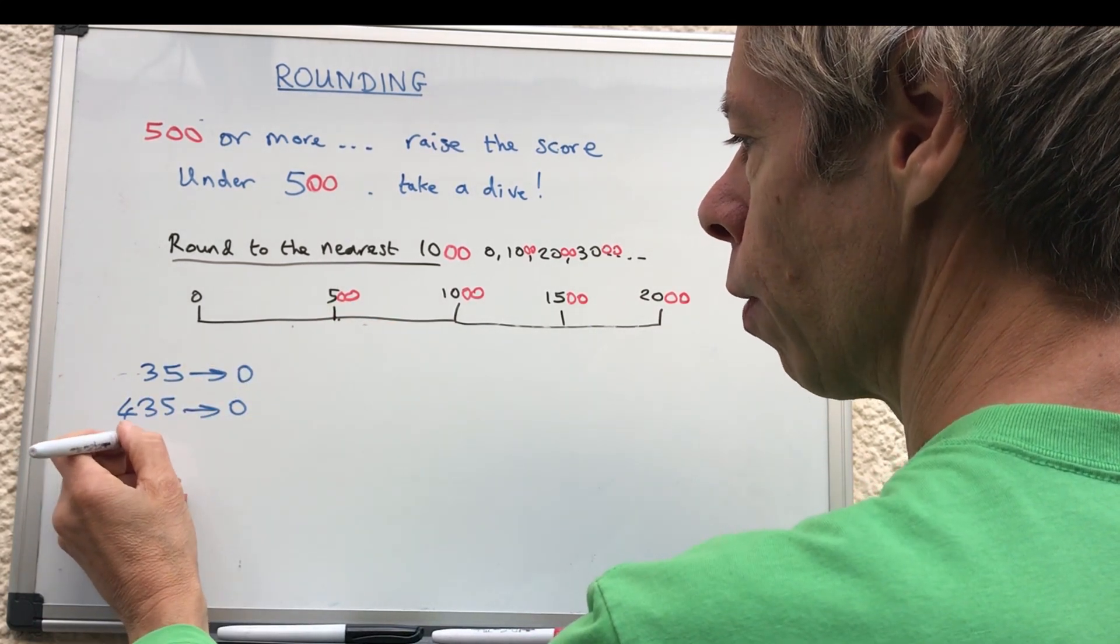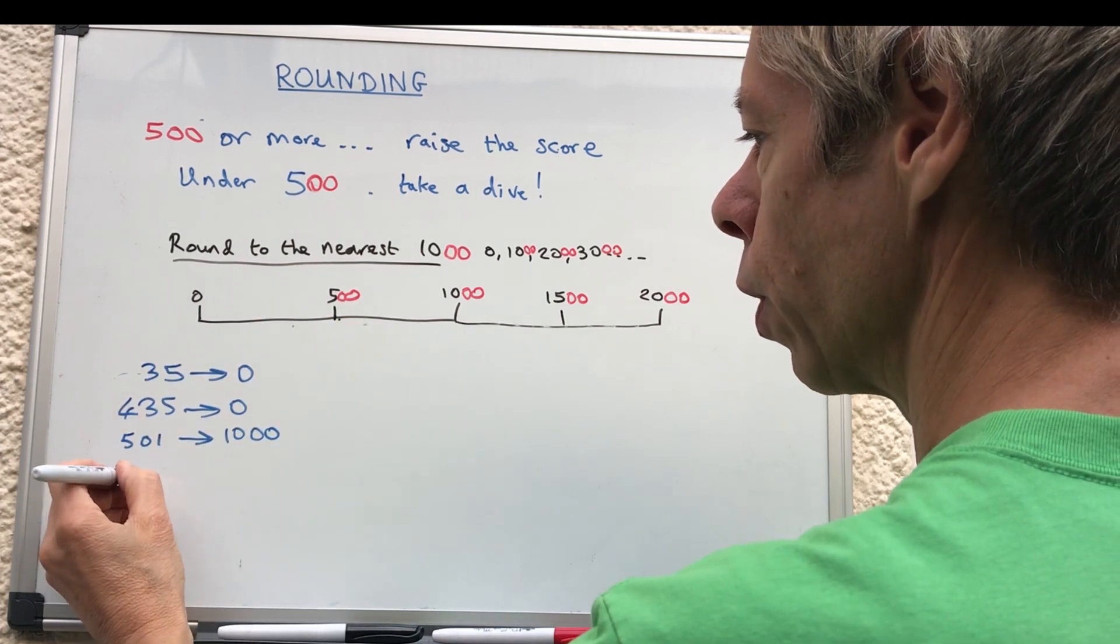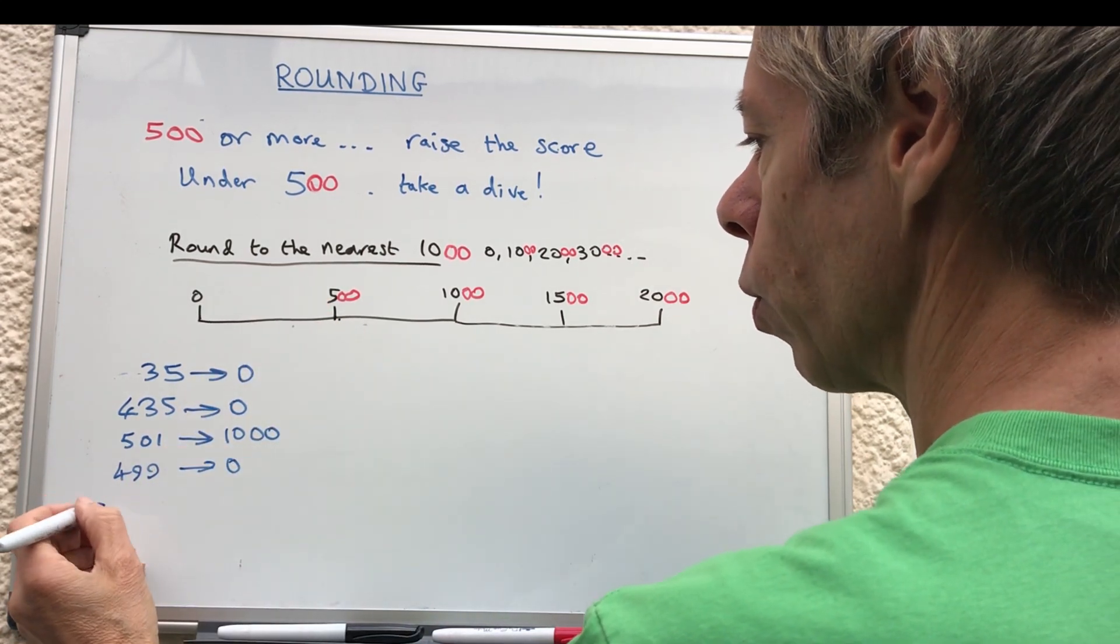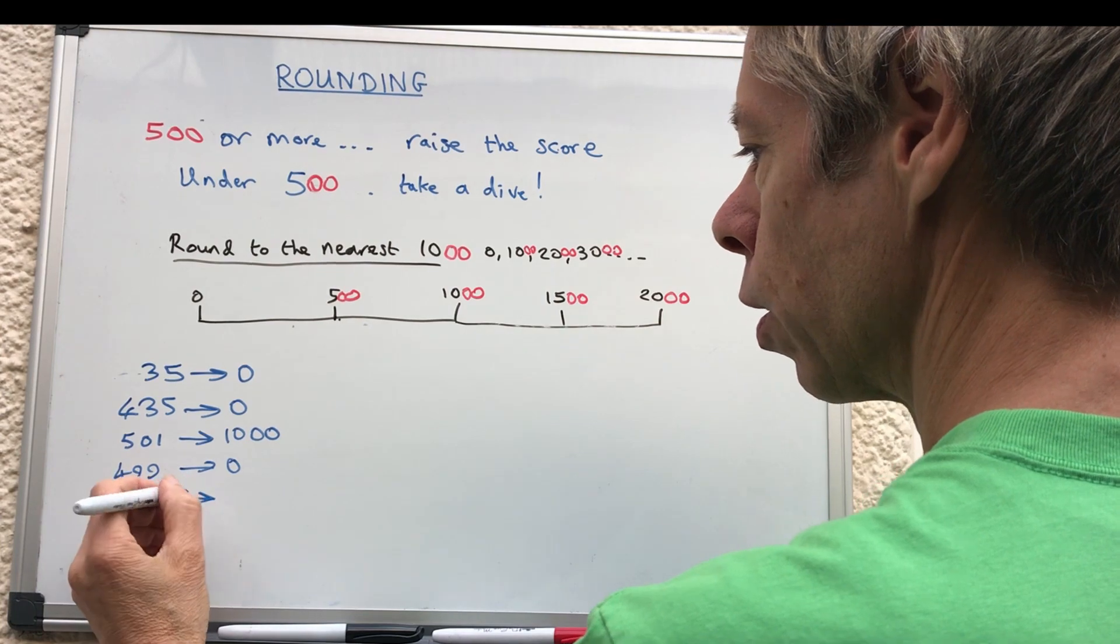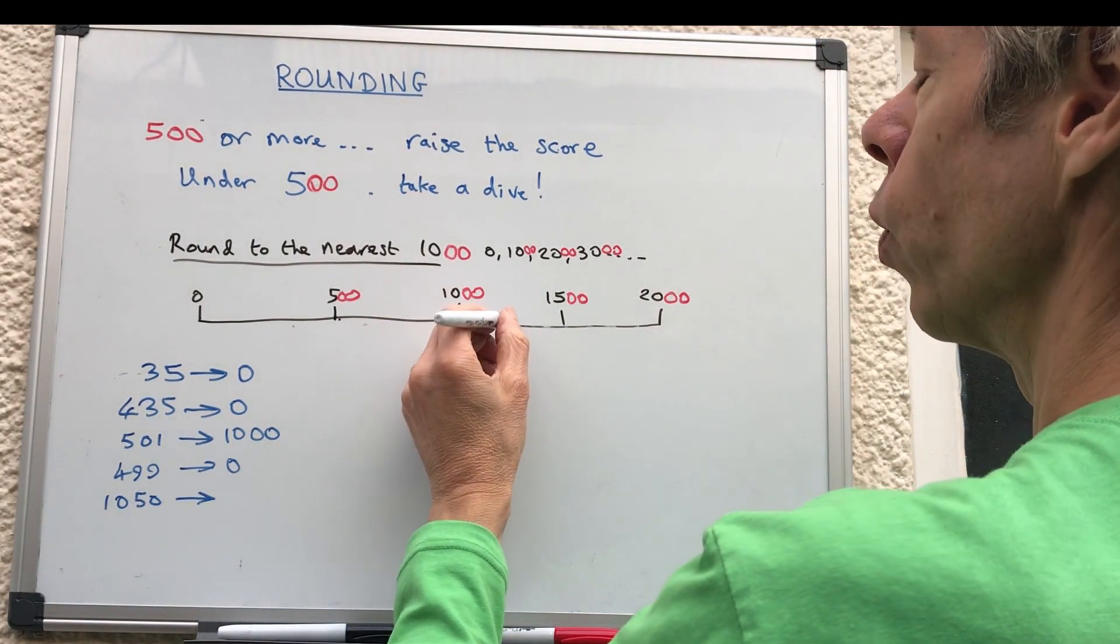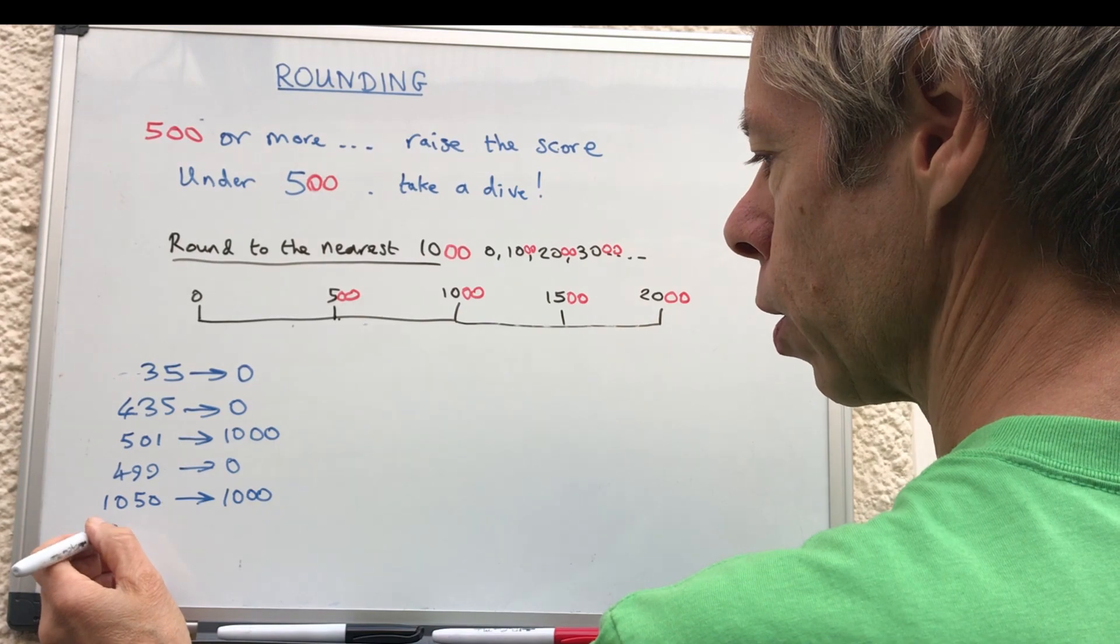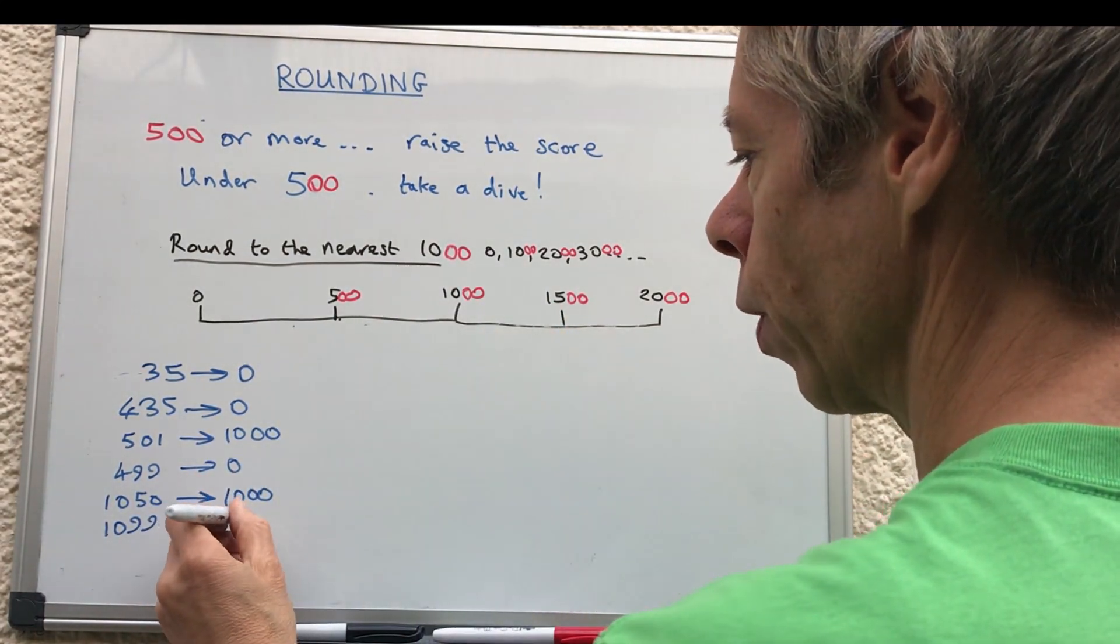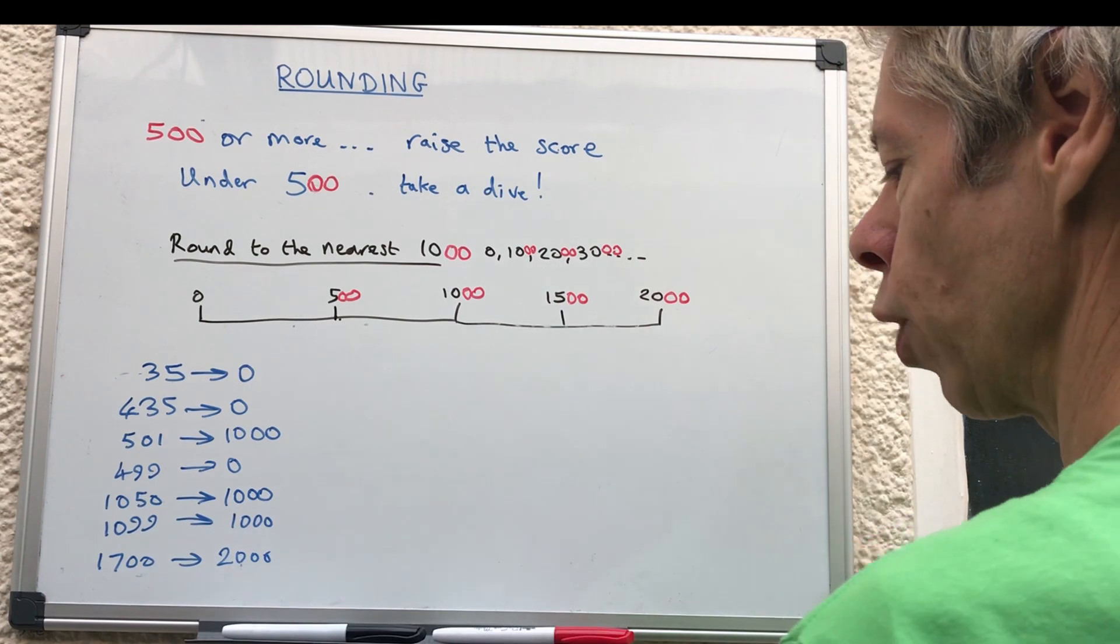If we had 501, that is clearly over 500, so we go up to 1000. Like I said before, if you had 499, don't round it up to 500 and then go up because under 500, so that would be zero. So if we had 1050, don't forget the cutoff point is 1500. Some people get confused with that 50. So that's clearly in this range, haven't got to the 1500, so that would be 1000. If we had 1099, some people get confused because it's going to go to the next 100. Well, it's way under that, so that's still going to be 1000. 1700 is here, so that's going to go up to 2000.